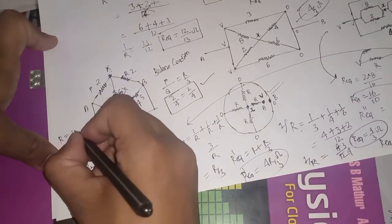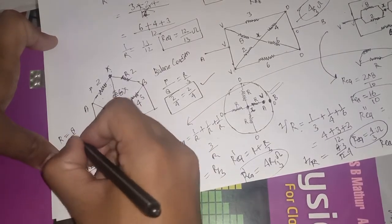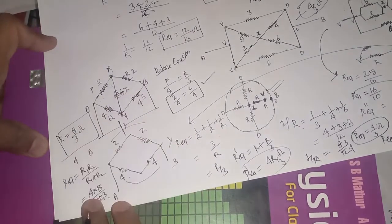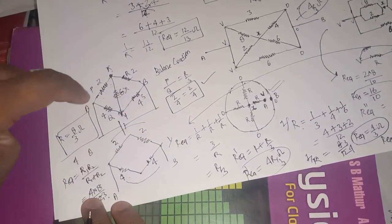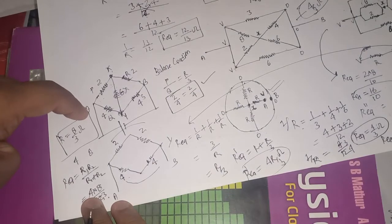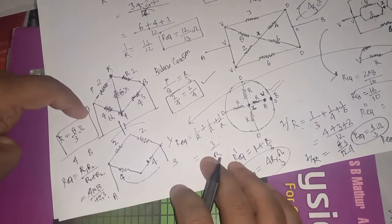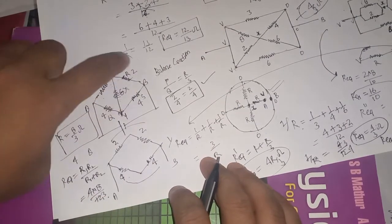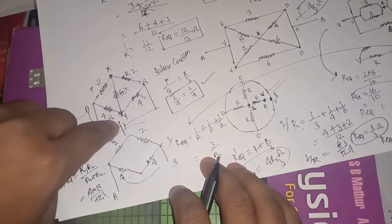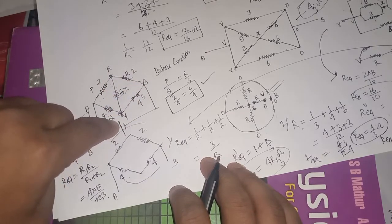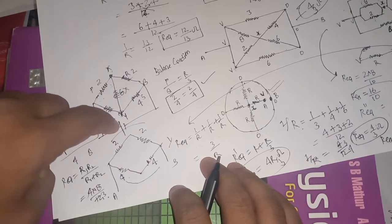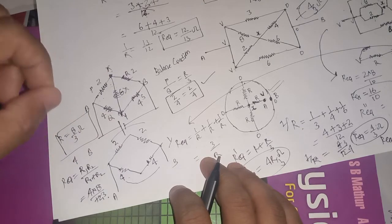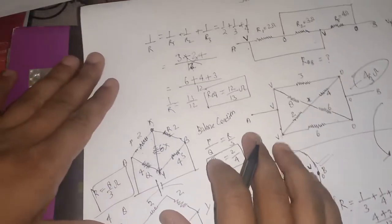So the value of R equivalent we got is 8 by 3 ohm. This is the solution. If the Wheatstone bridge balance condition holds, then the question is solved this way.